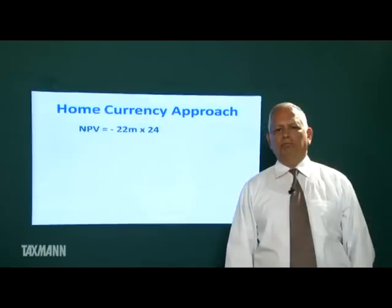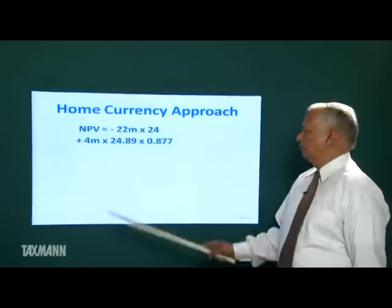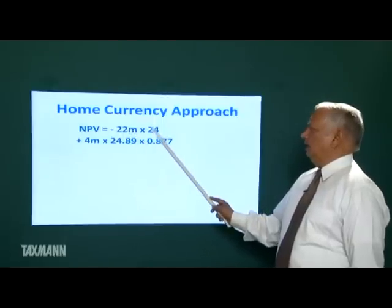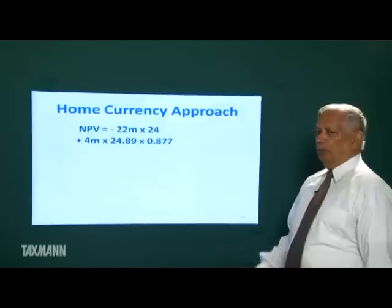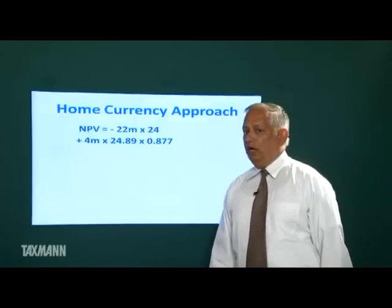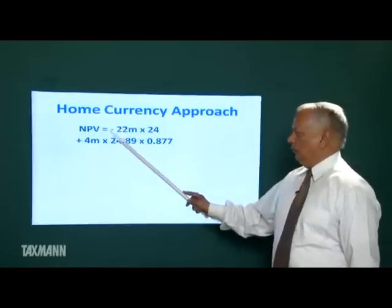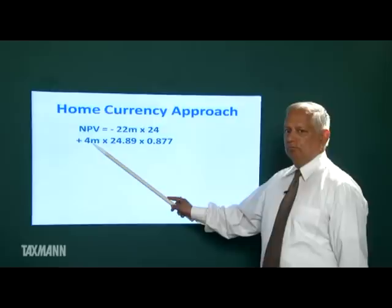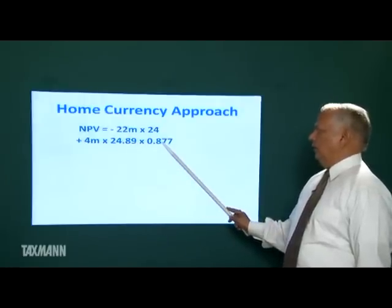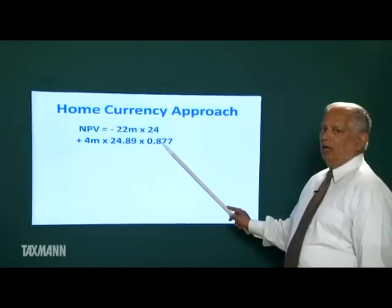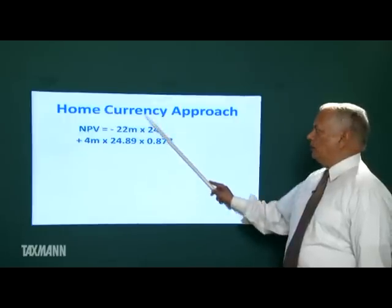Under the home currency approach, we calculate net present value. The NPV will start with minus 22 million CHF at the rate of rupees 24 — therefore you have to pay that amount in rupees. In the zero period, you invest 22 million CHF, which you can buy at 22 × 24 rupees. At the end of the first year, you receive 4 million CHF; 1 CHF equals rupees 24.89, and this is the present value factor at the discounting rate. The required rate of return in rupees is 14 percent.